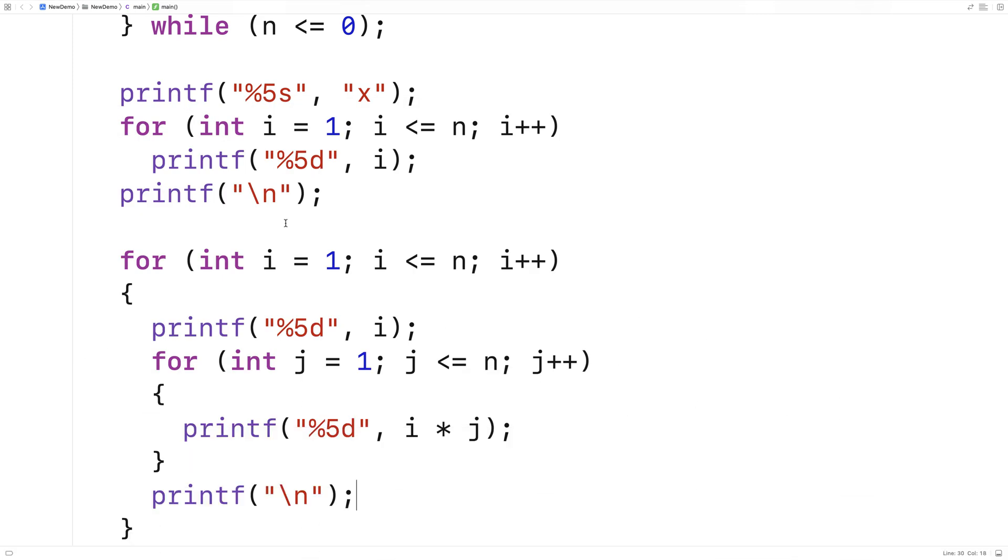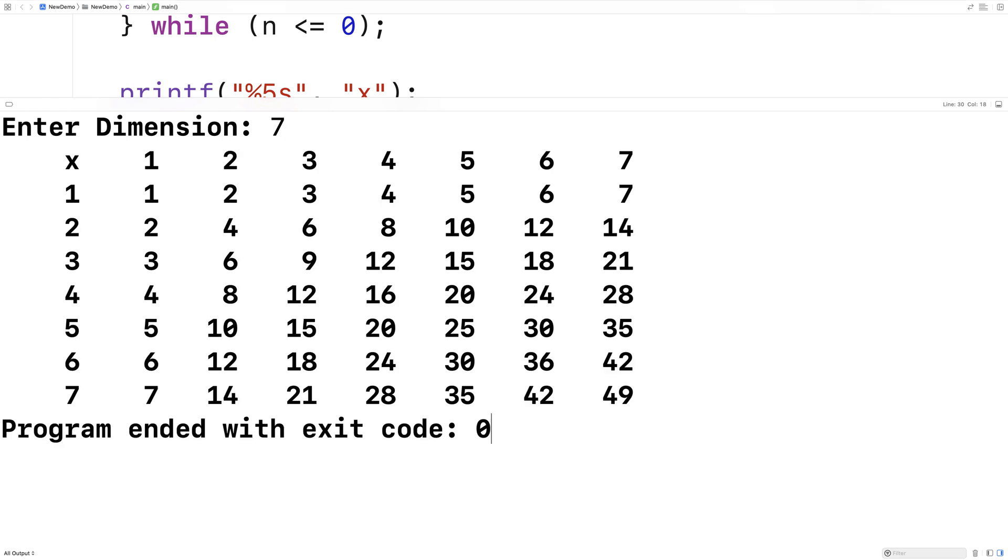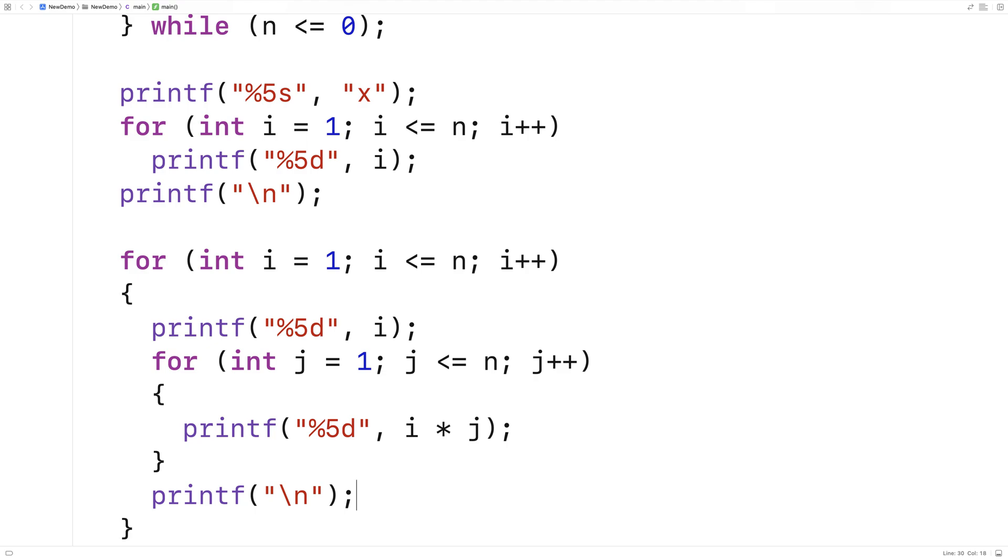We could close this and try something like seven. Now we get a seven by seven multiplication table. This is how we can create a multiplication table in C.